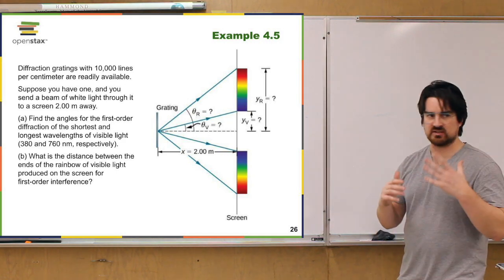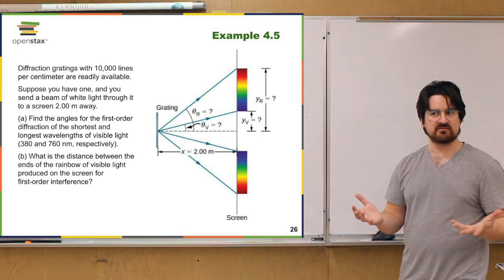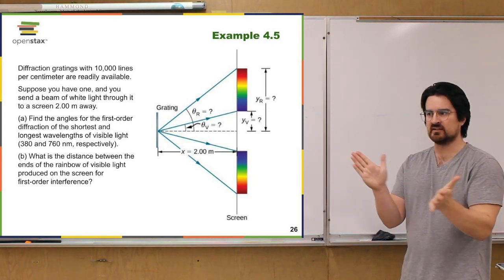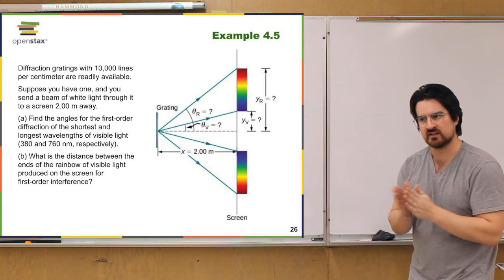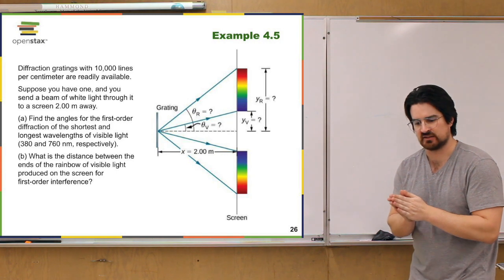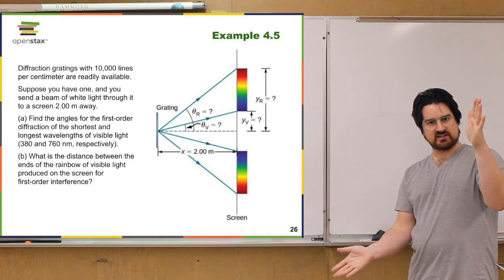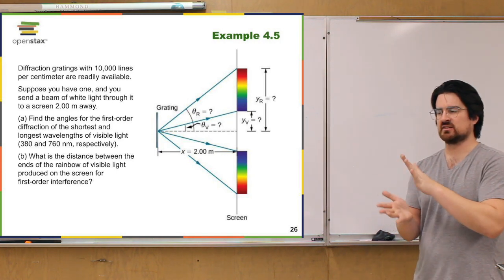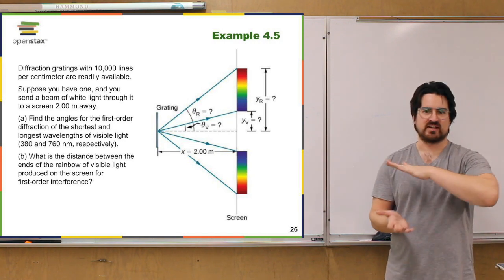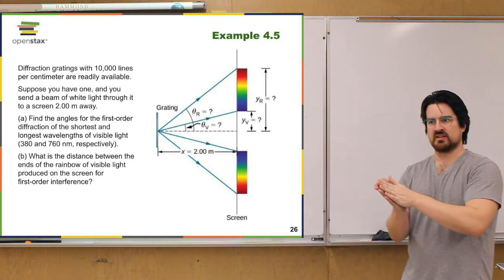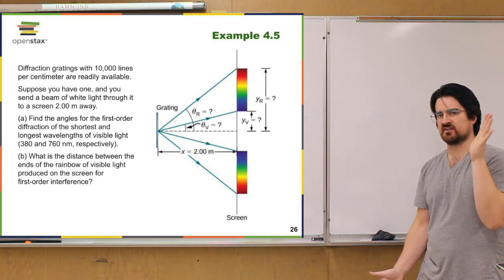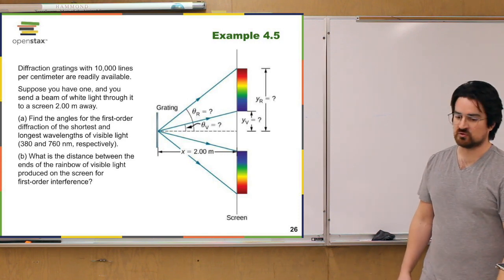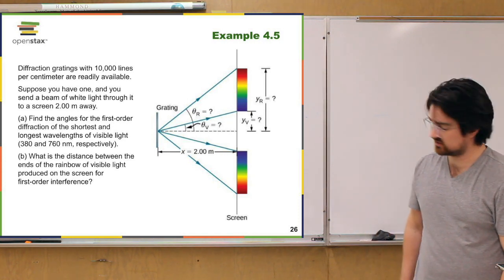This is a useful thing about diffraction gratings: if you have light with multiple wavelengths, a diffraction grating allows you to spread that light out. If you're interested in examining the fine details of a spectrum, you want to be able to spread it out so you can see the finer details. That's one useful application of diffraction gratings.